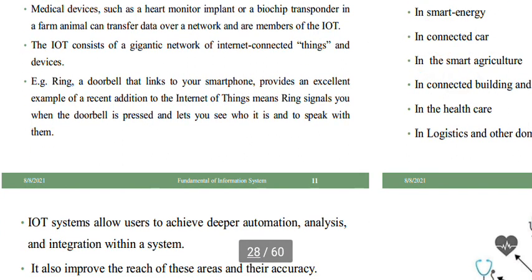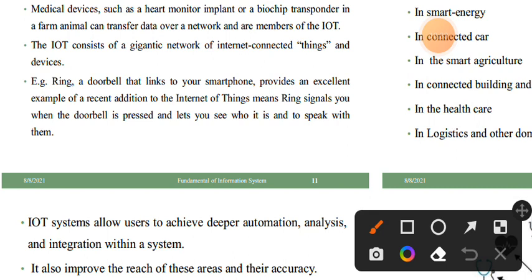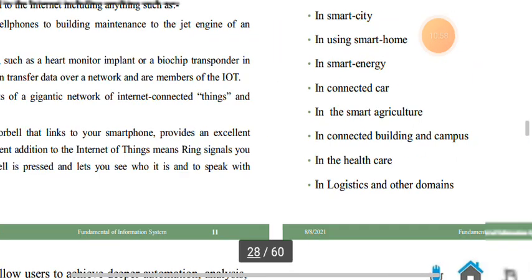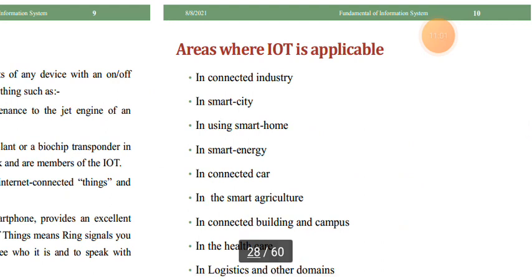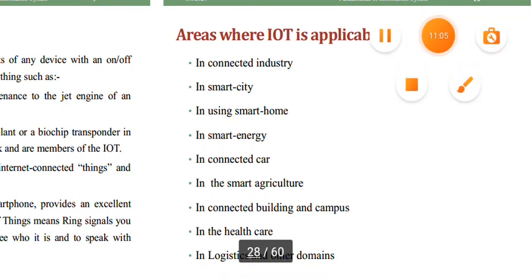An excellent example of IoT is the Ring doorbell, which provides notifications when the doorbell is pressed. The door will signal you wirelessly through the Ring system, notifying you at home even when you are not near the door.